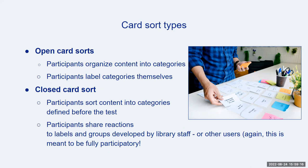In a closed sort, participants sort content into pre-named categories. A closed sort is best when you want to see how well users understand categories you're considering for a new site or that are already in place in your existing website or system. To make a closed sort fully participatory, you might work with users or community partners to develop the categories and then test those categories with a different set of users. Open and closed sorts can often complement each other — you could start with an open card sort to determine how users categorize website content and then run a closed sort to determine the clarity and effectiveness of labels you're currently using or proposing.